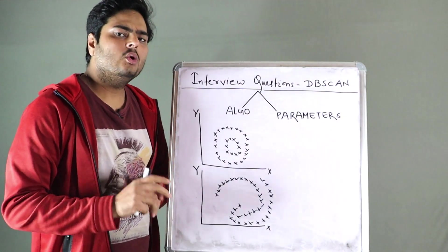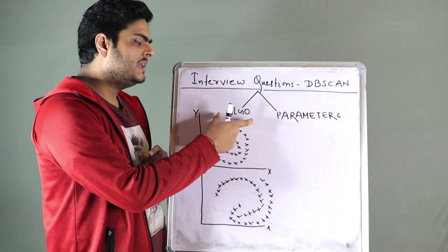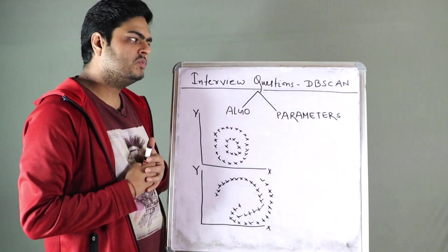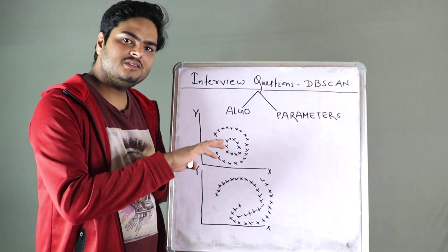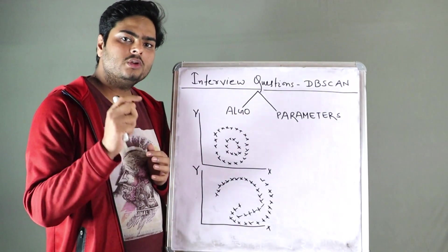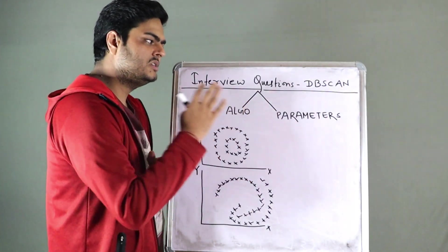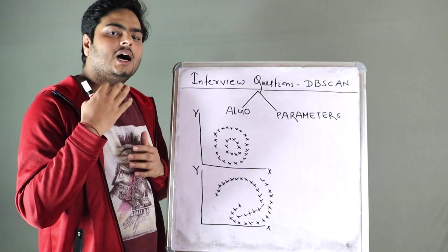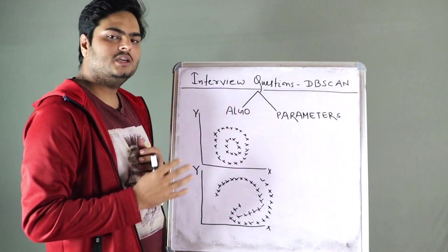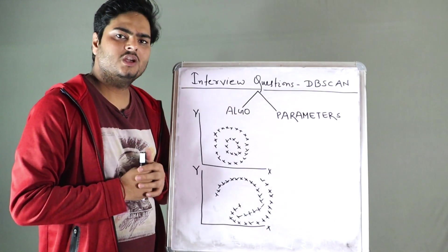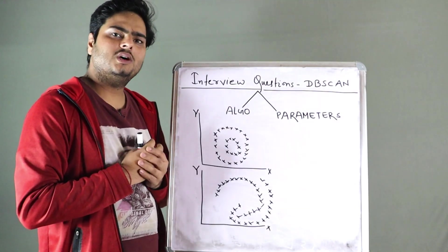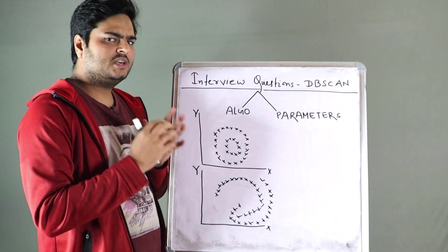So interviewer will try to understand what is your understanding from the algorithm point of view, how density based clustering works, how DB scan works, what is the fundamental principle, what are the advantages, what are the disadvantages. That is one area and other area and more important area of DB scan clustering or density based clustering is how do you set the parameters and what are the importance of parameters in density based clustering. We will understand what are the different questions in this area and I will tell you how to answer those questions confidently. Let's start guys.